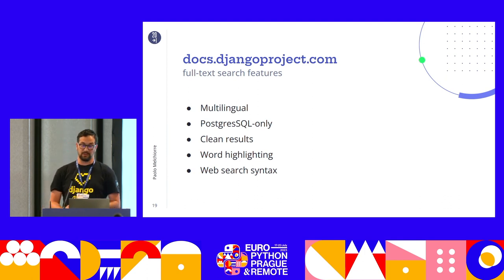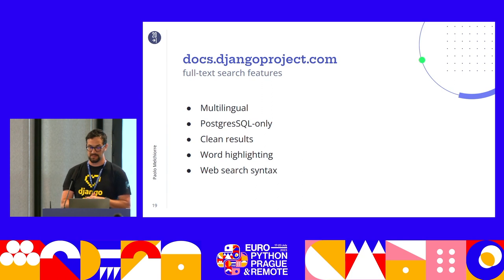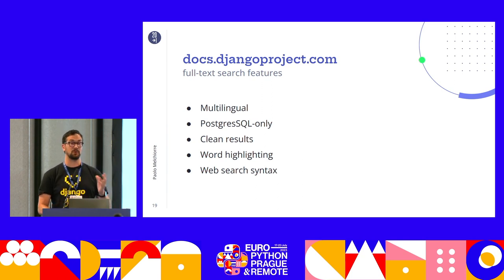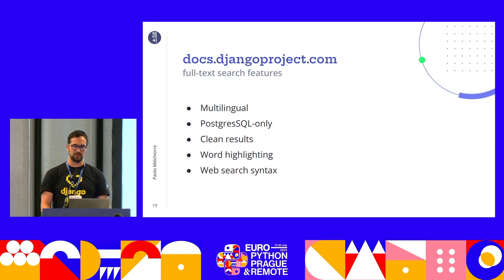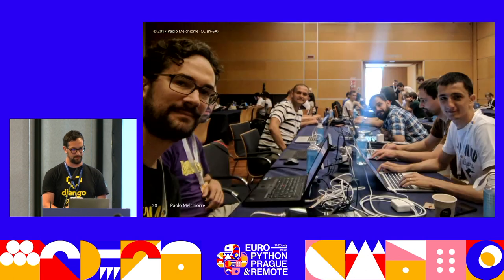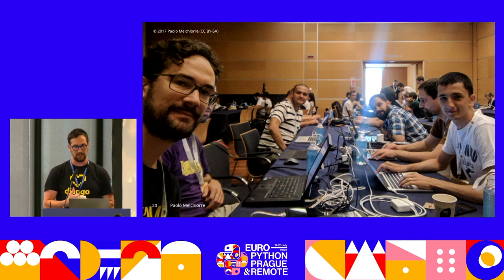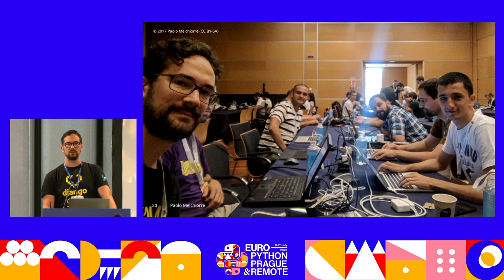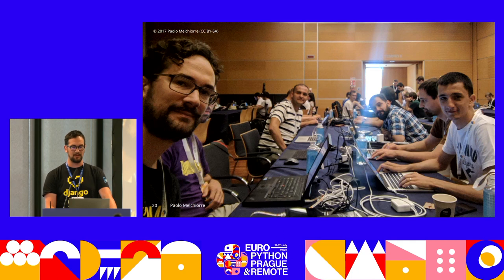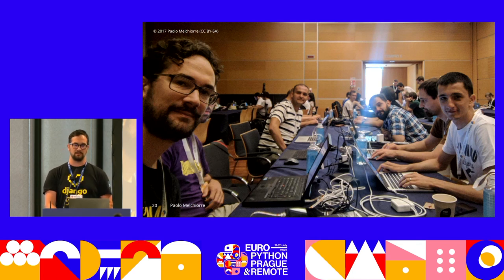Another documentation feature very important to me is the full-text search. Today it has a lot of features — it's multilingual, based on Postgres, and supports highlighting and web search syntax. After using the old version of the search function, I tried to improve it myself. At the Django sprint organized at EuroPython 2017 in Rimini, I proposed using a full-text search based on Postgres, because at that time the site was using an external search engine. After that sprint, I worked on the pull request, and in a few months we totally replaced the external search engine and started using only Django to provide this functionality.